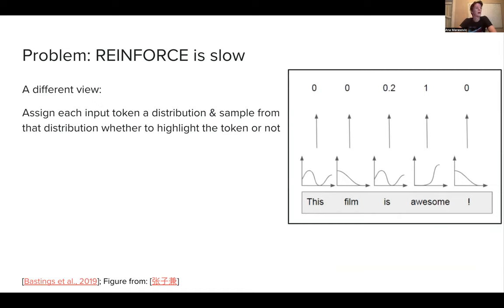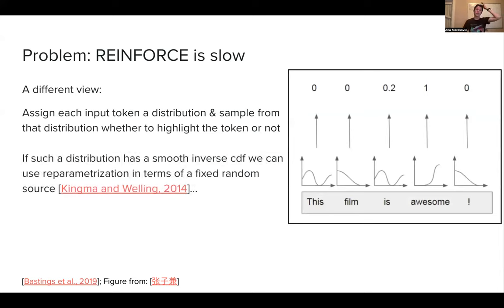All right. The problem is that this is that REINFORCE is slow. And now I will mention what you can do here. I don't want to go into details of this paper, but the different view from assigning binary variables, which are very strict zero or one, you can imagine that you have some kind of distribution for each one of the tokens and you sample from that distribution, and then you get something which is kind of close to the binary variables, not really exactly zero or one. So here, for example, we have 0.2. And if such a distribution has a smooth inverse CDF, then we can use something known as reparametrization trick.